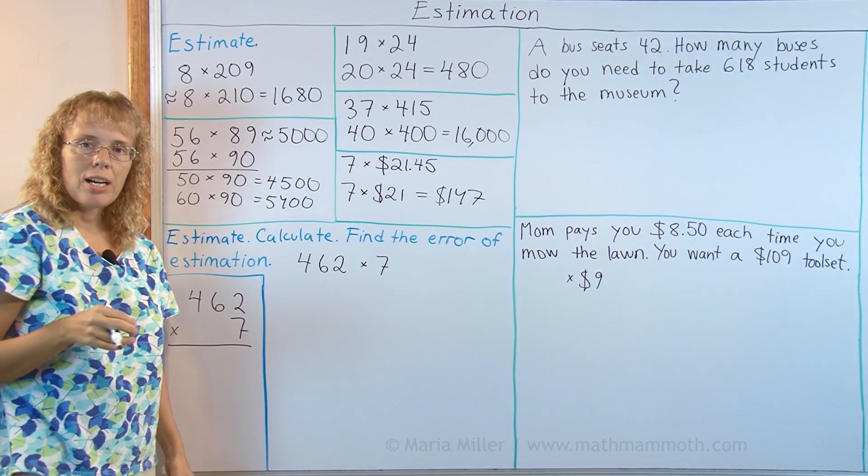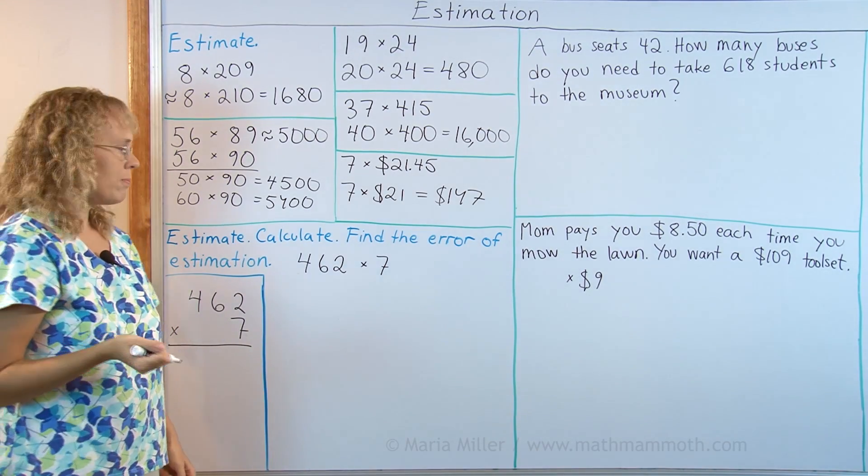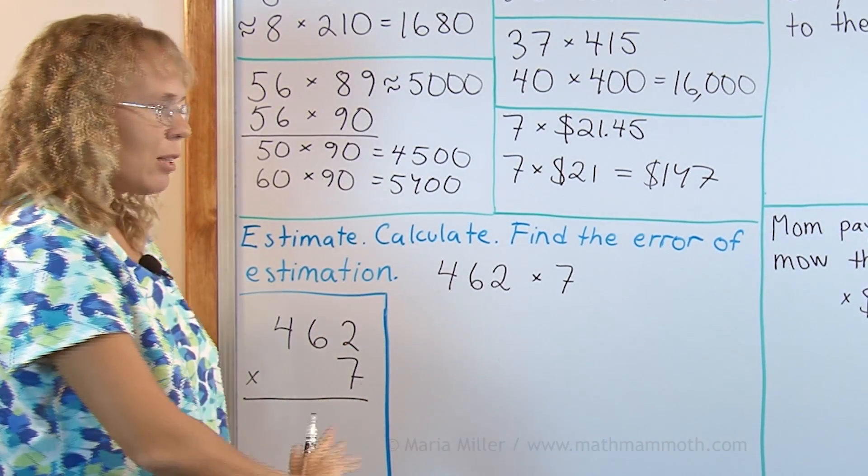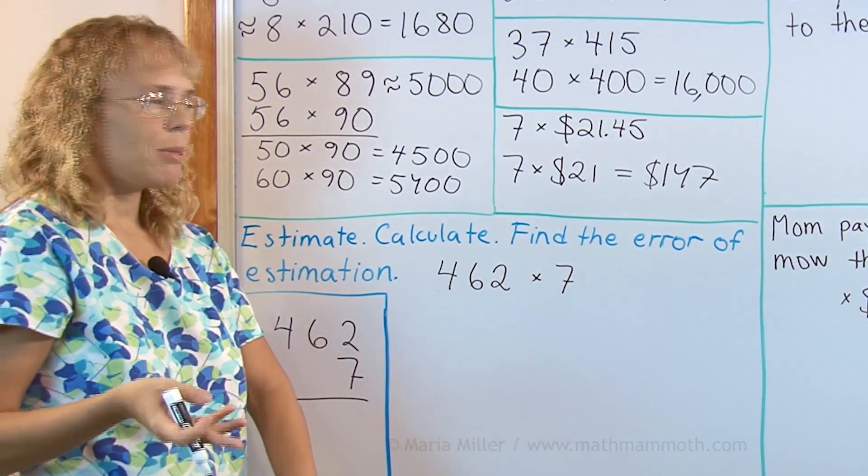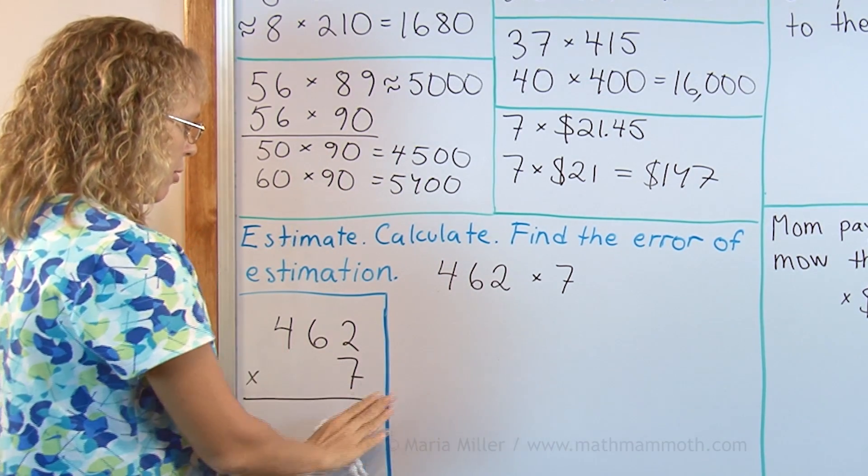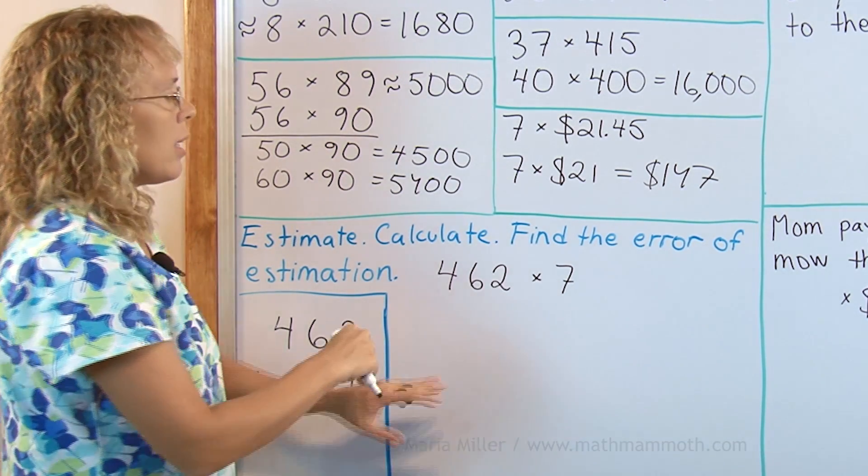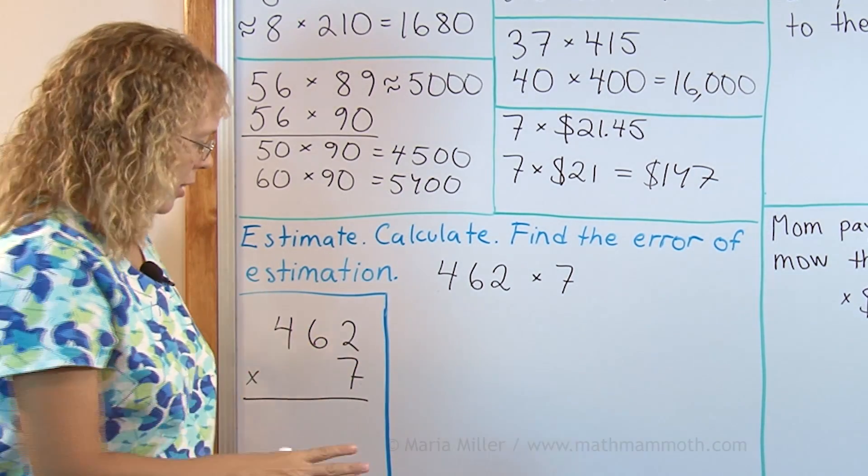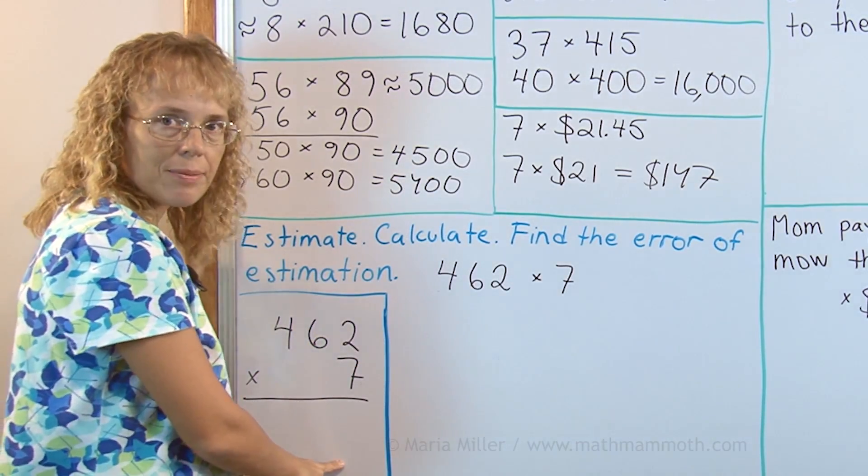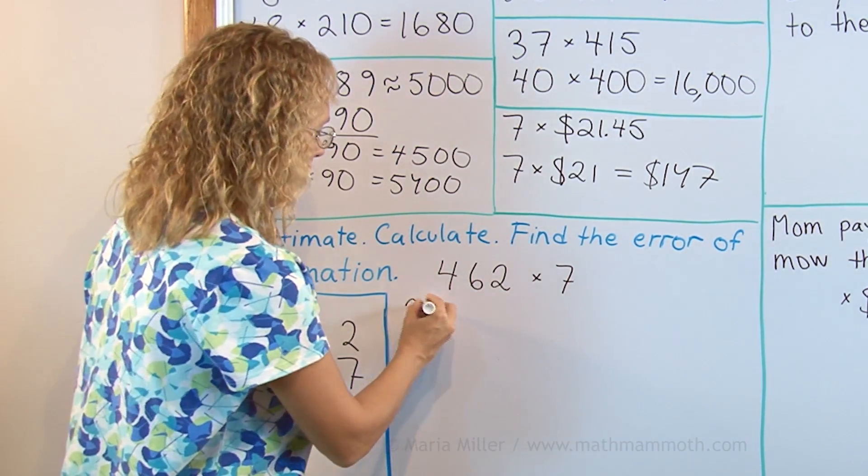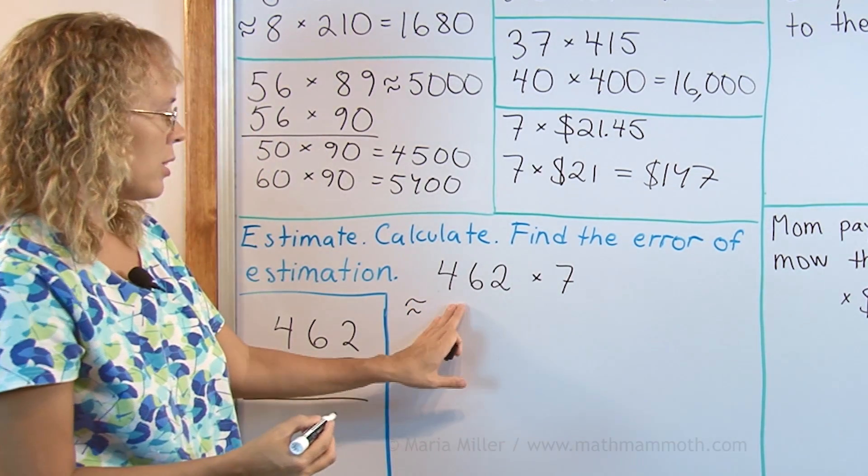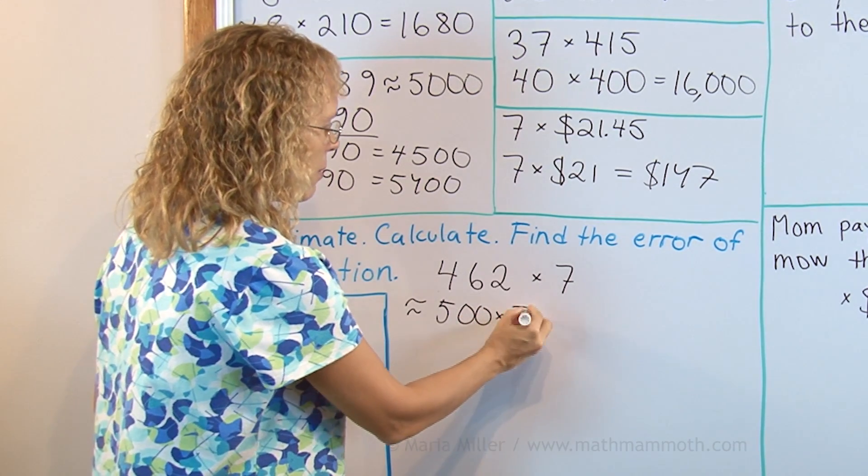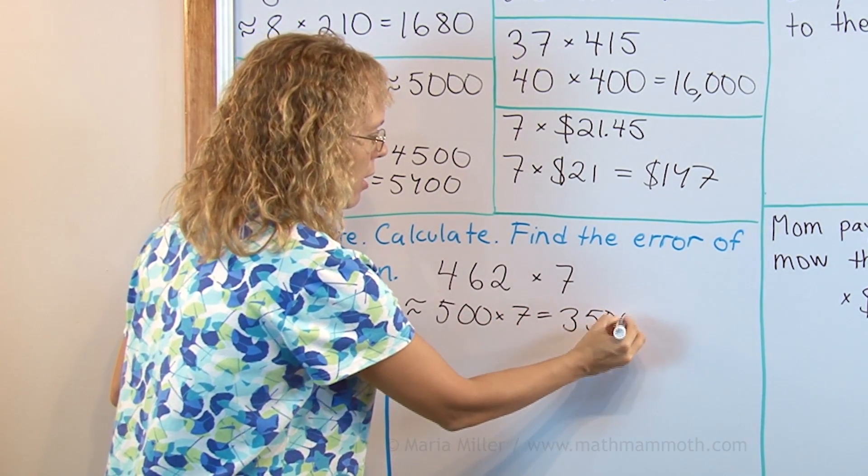And when we estimate sometimes we want to find the error of estimation. So here's one that type of problem we estimate we calculate exactly and then we check how much was the error of estimation. The idea here is that if you're given a multiplication problem and you estimate first then your estimation will help you in deciding if you got this one correct.